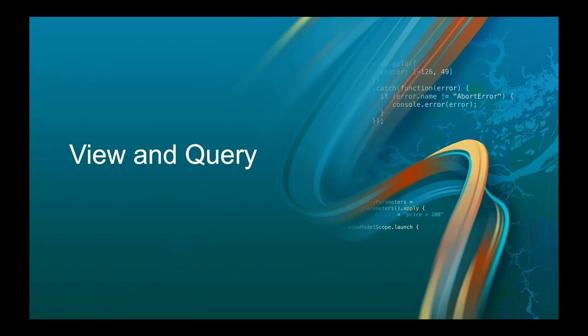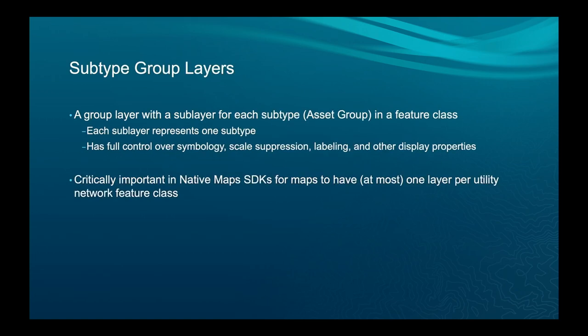Now view and query — this is where things get more interesting. Displaying features, in one way features are just features you display on the map. But we have extra methods for the utility network. The first is what's called a subtype group layer — a group layer with a sublayer for each asset group. It gives you full control over symbology for each asset group. For performance reasons in the UN, disparate feature classes like fuses, transformers, and switches were combined into one feature class, but you still want different fields and symbology for each.